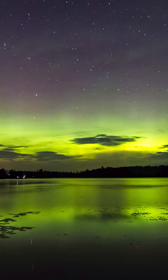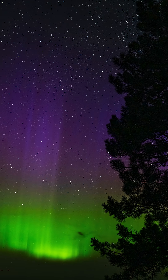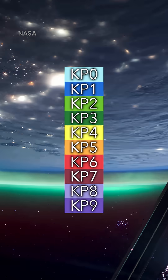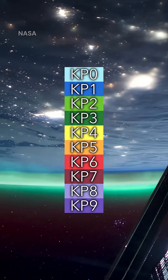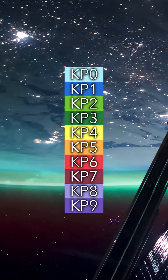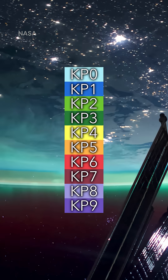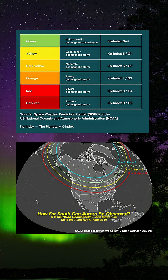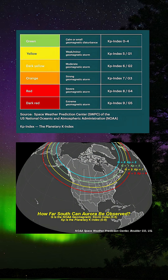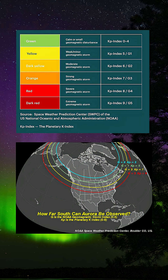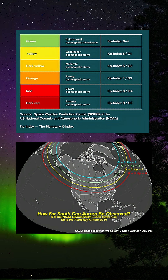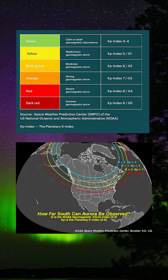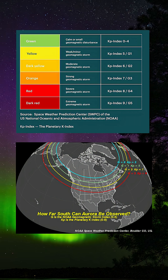First, you'll need to know when and where you can see the northern lights. The amount of geomagnetic activity in our planet's atmosphere is measured on a scale called the KP index. The higher the KP index, the higher chances you have of seeing the aurora. Because Minnesota is one of the northernmost states in the contiguous U.S., we can see the northern lights even in mild solar storms.